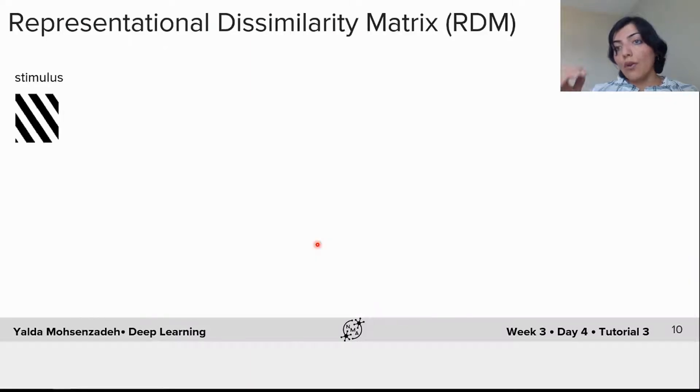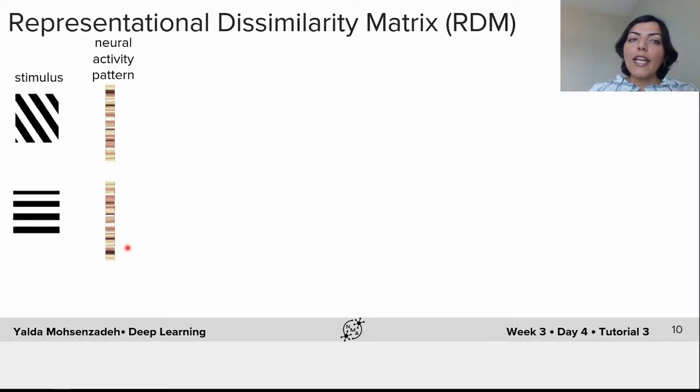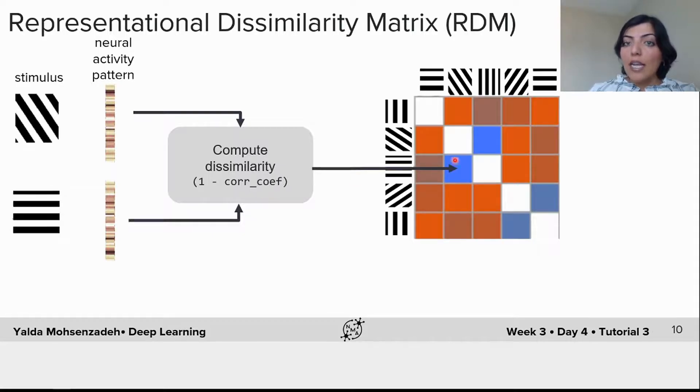One approach is to use representational similarity analysis. The idea here is that for any pair of stimuli in the stimulus set, you extract the neural activity pattern and then compute a dissimilarity measure between them, which could be different distance measures.